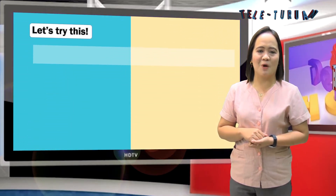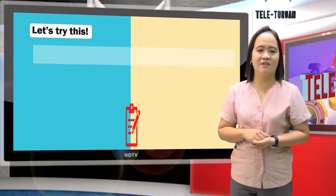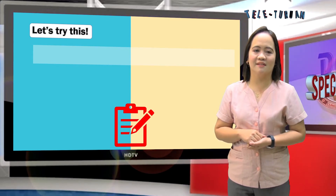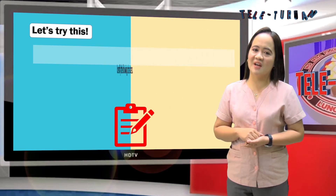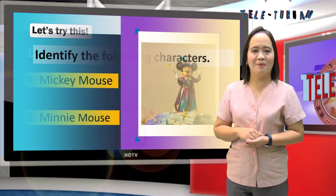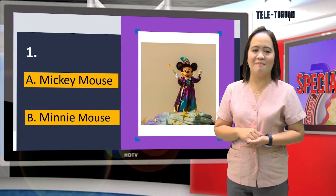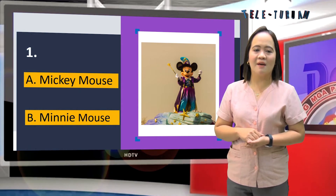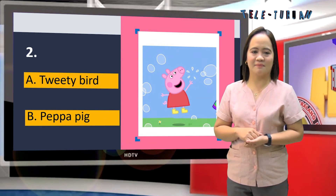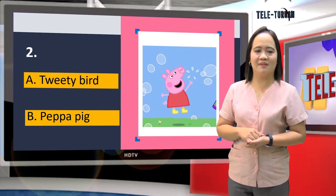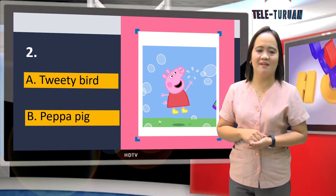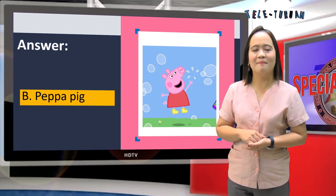I hope that at this point you already have a better understanding of our topic. Now it's your turn to work on the activity. Identify the following characters. Number 1: A. Mickey Mouse, B. Minnie Mouse — very good, Mickey Mouse. Number 2: A. Tweety Bird, B. Peppa Pig — you are correct, Peppa Pig.